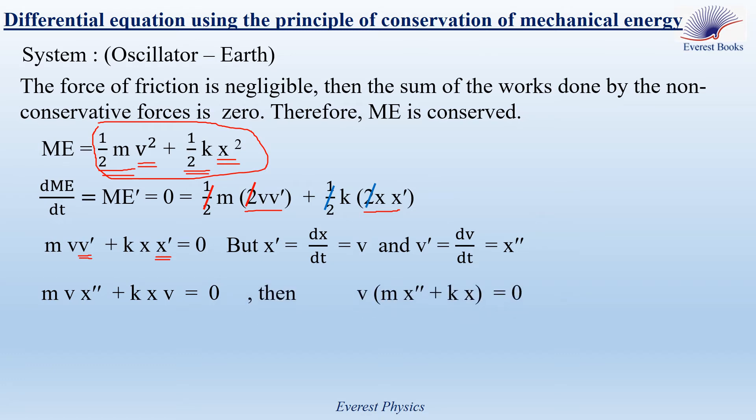Take v as a common factor. Now, the product of v and M x double prime plus K x is equal to zero. Then, either v or M x double prime plus K x equal zero. Let's start with the first choice. v is equal to zero.